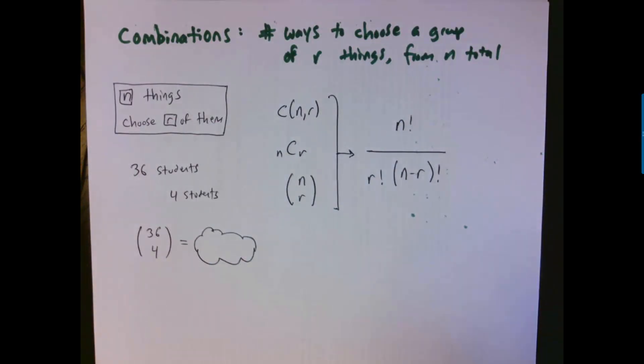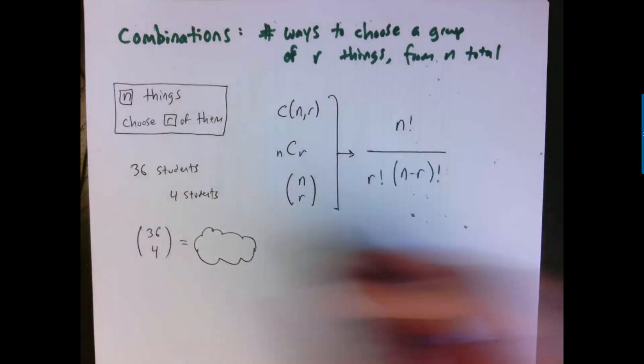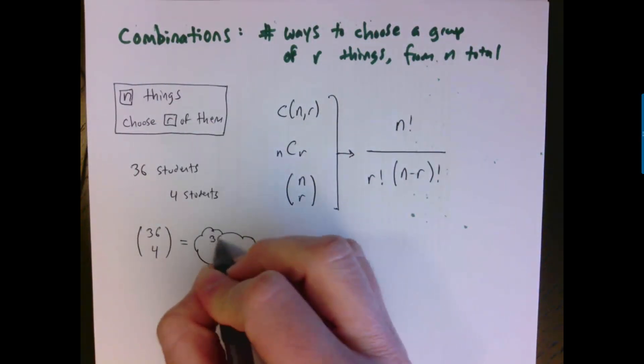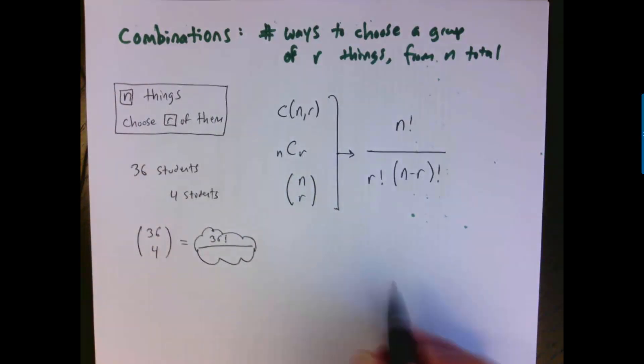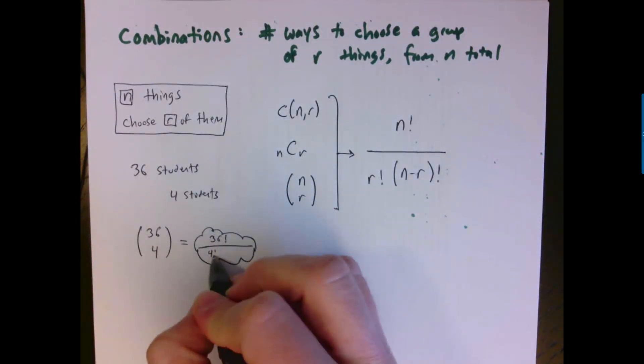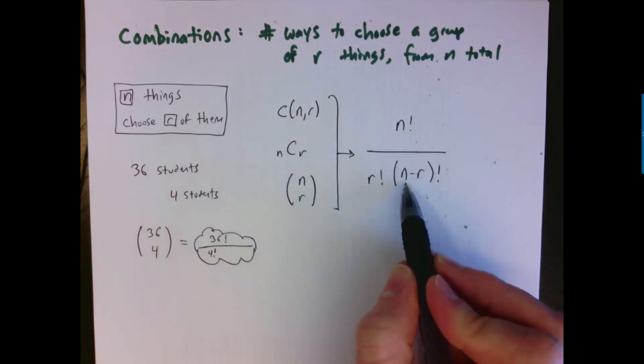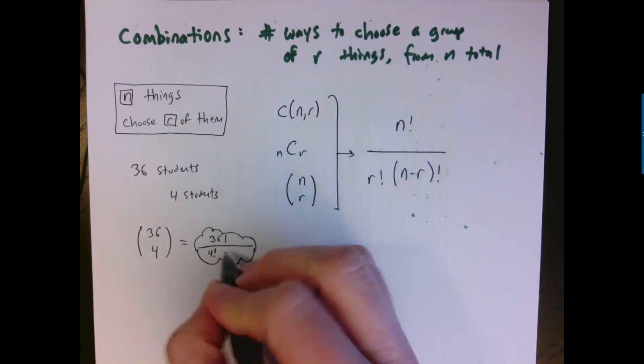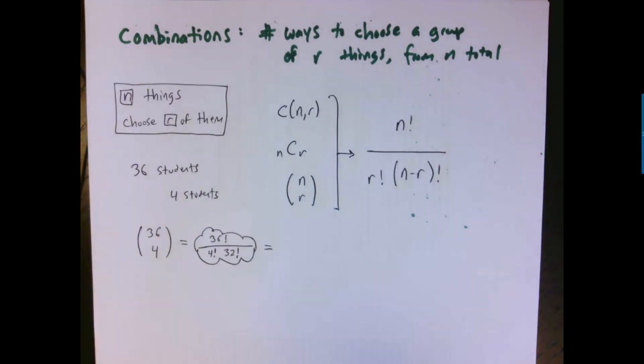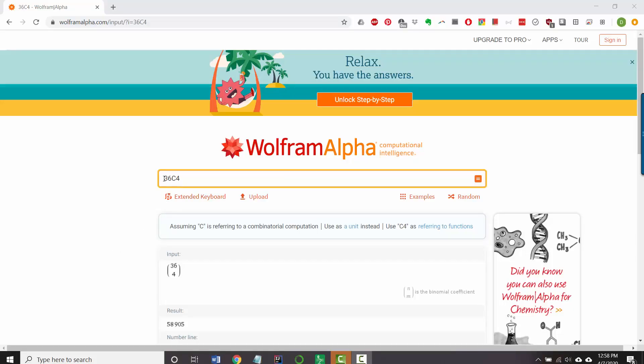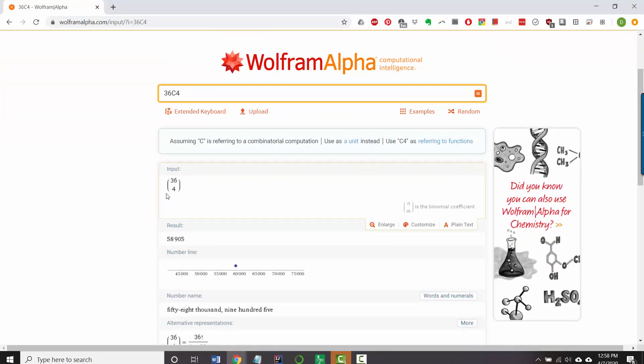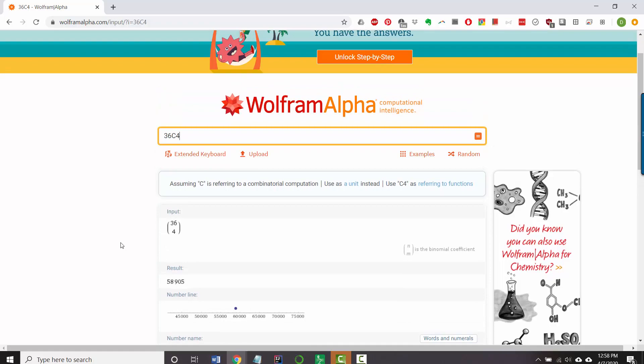My n here was 36. So that's going to be 36 factorial divided by r factorial - that's 4 factorial - and then 36 minus 4 is 32, so then that's 32 factorial. Let's jump on over to Wolfram Alpha. So I type 36C4 for 36 choose 4. You see it has rewritten with the proper notation here, and the answer is 58,905. So that's the total number of groups of four people I could choose.